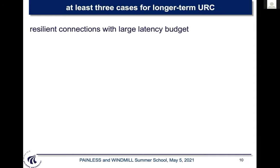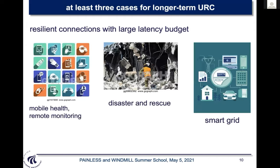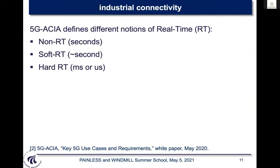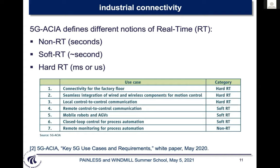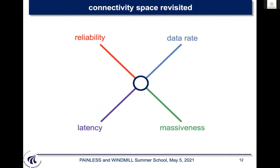At least three cases require longer-term ultra-reliable connectivity: mobile health and remote monitoring, disaster and rescue, and smart grid — where the grid operates at 50 Hz, meaning important events happen with 20 millisecond latency. The 5G Alliance for Industrial Connectivity defines different notions of real time: non-real time (seconds), soft real time (approximately a second), and hard real time (milliseconds or microseconds). This suggests revisiting the connectivity space with four dimensions: reliability, latency, data rate, and massiveness.